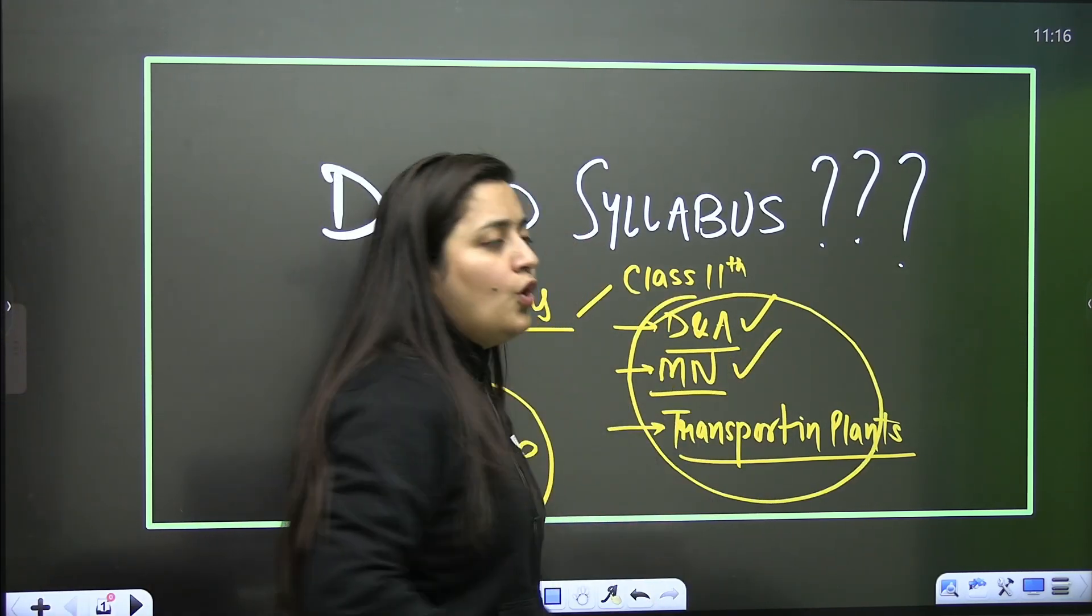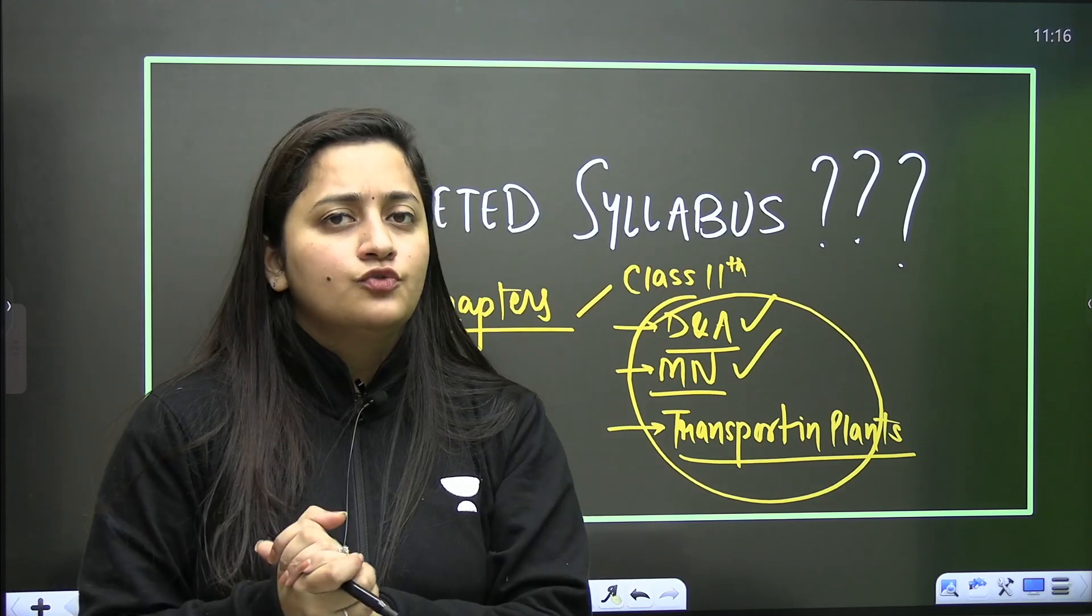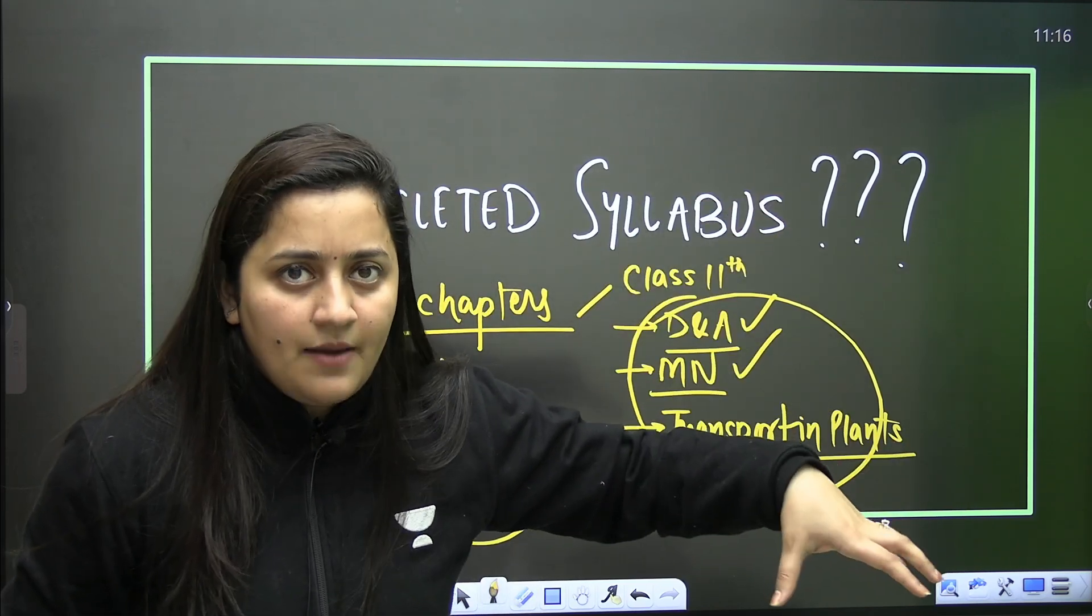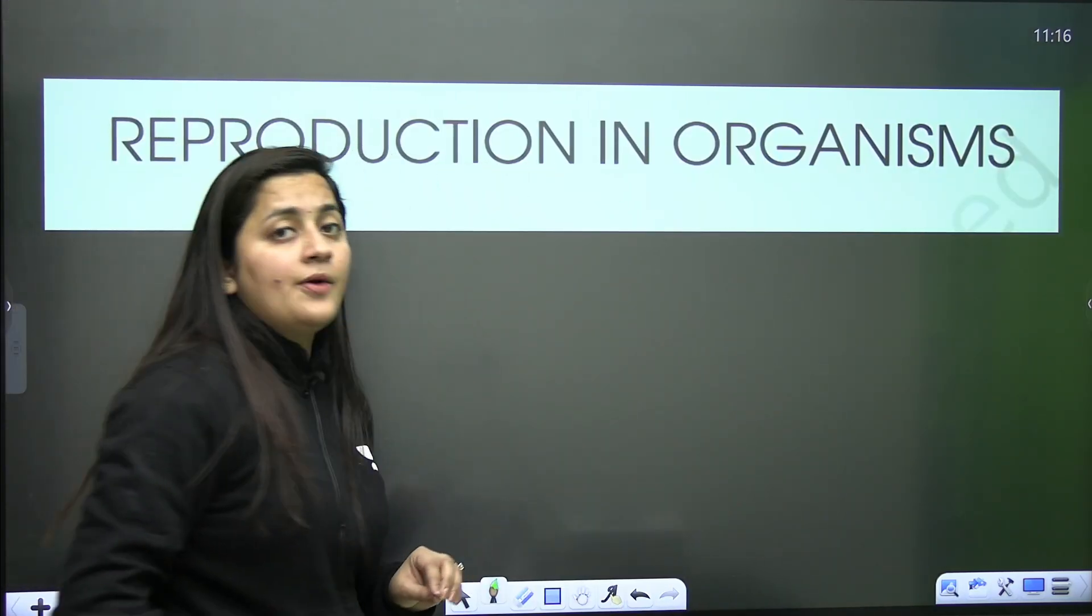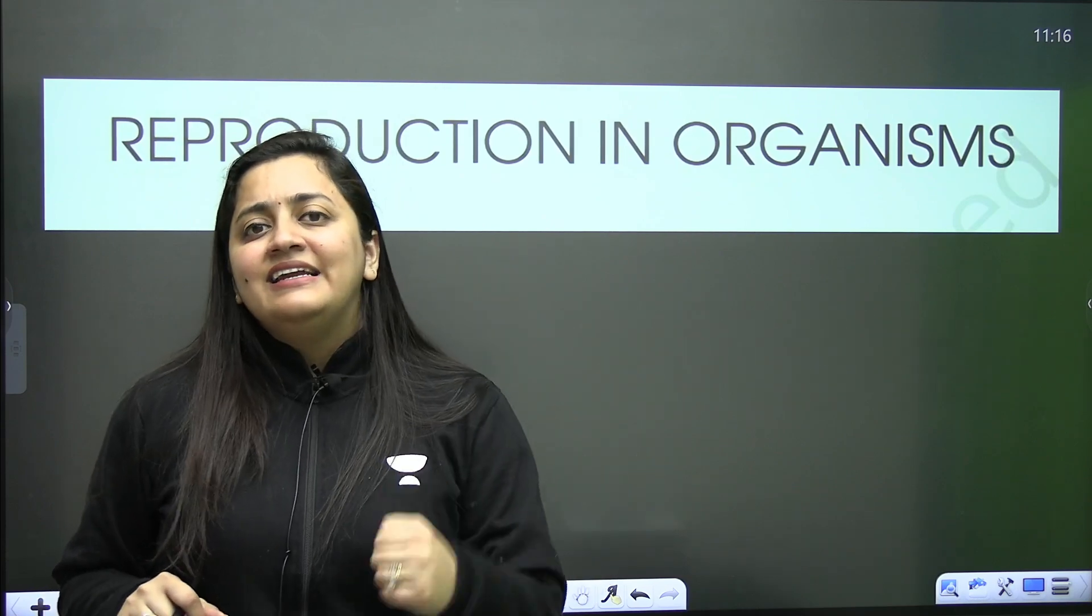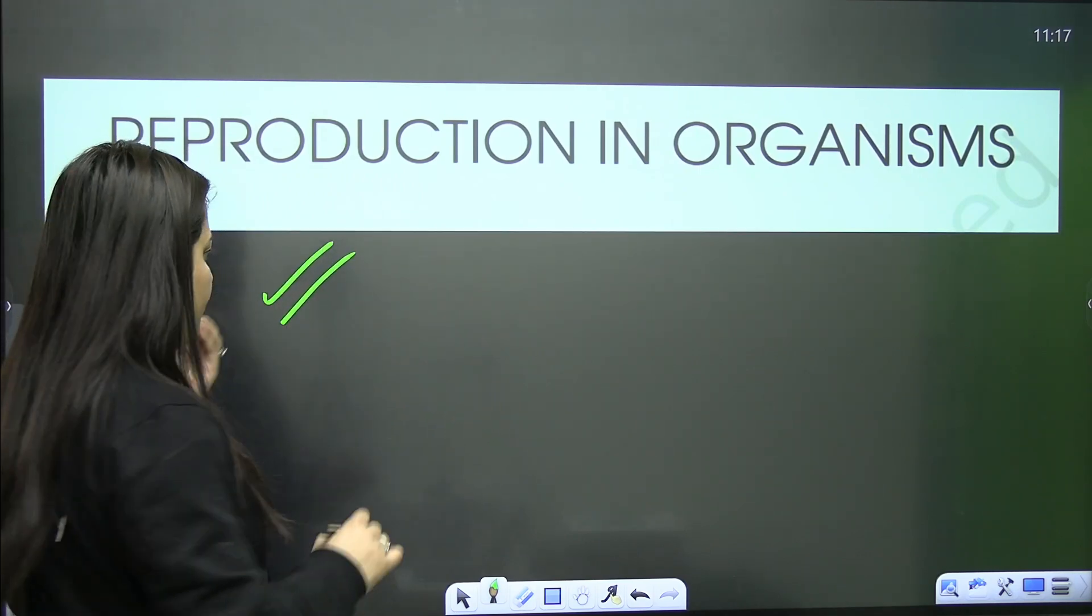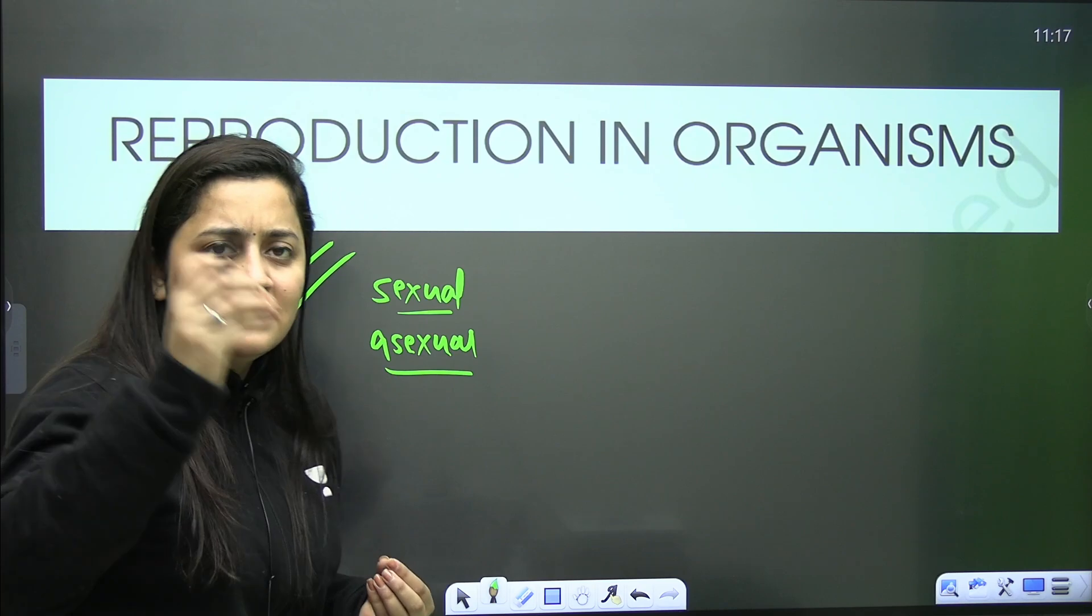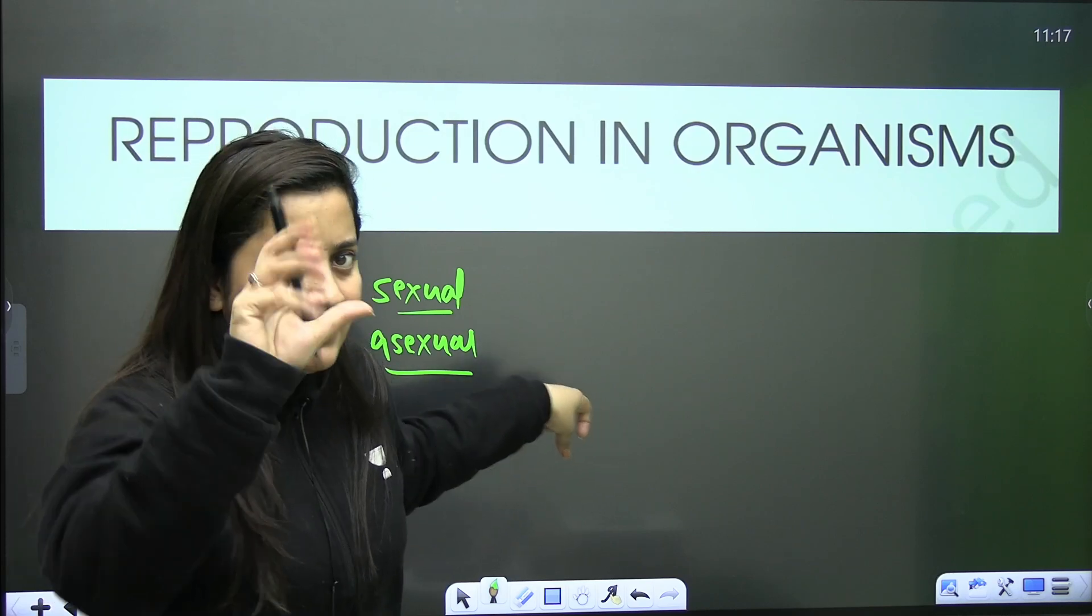Now, those who are targeting 360 out of 360, they are not even missing these chapters. Let me tell you students why. Because these chapters are linked with the syllabus that is still the part of your examination. First of all, let's start with the reproduction in organisms chapter. While teaching this chapter in my batches, I always mention how this chapter is linked to other chapters.